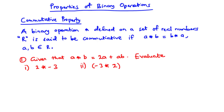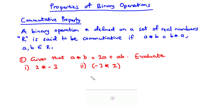Now we have a question here. Given that A star B is equal to 2A plus AB, we are going to evaluate: (I) 2 star negative 3, and then (II) negative 3 star 2. So let's solve this problem.